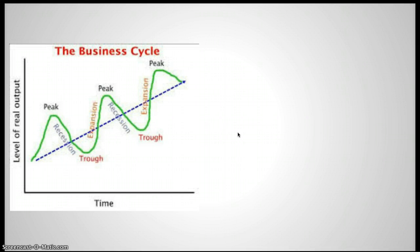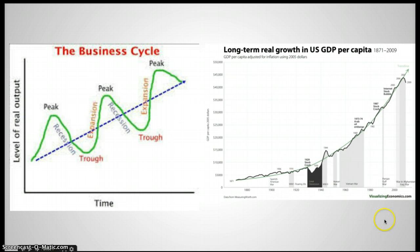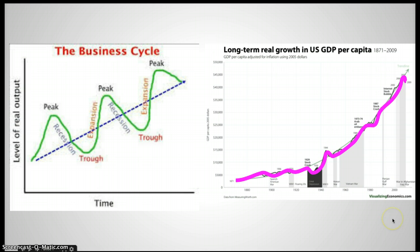One last thing I should say about the business cycle: if you look at this picture, the economy is going up and down, but if you go from the first point to the last point, you can see that over time the amount of growth has gone up overall. This picture shows the economy from almost the beginning of the 1800s to 2009, and the general trend — highlighted in purple — is upward, despite the Great Depression being visible as a low point. Historically, while the economy does have short-term ups and downs like the business cycle shows, in the long term our economy has grown significantly, and we hope that will continue.